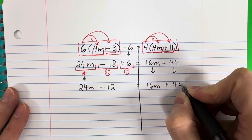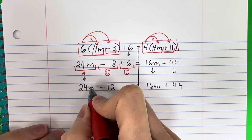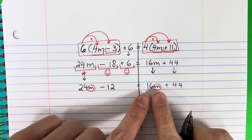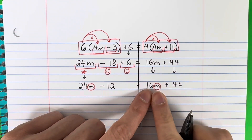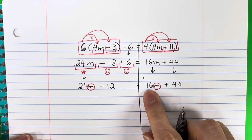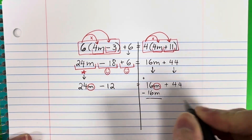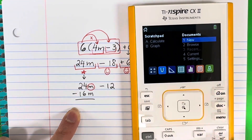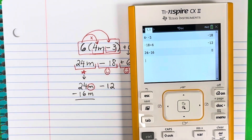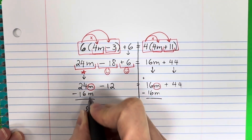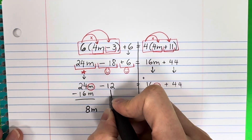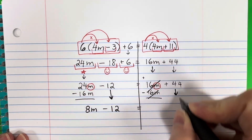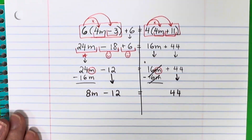Now we have two m terms. We move the m from the right side: since it's positive 16m, we subtract 16m from both sides. 24m minus 16m is 8m. On the right, 16m minus 16m cancels to 0. We bring down minus 12 on the left and 44 on the right, giving us 8m minus 12 equals 44.